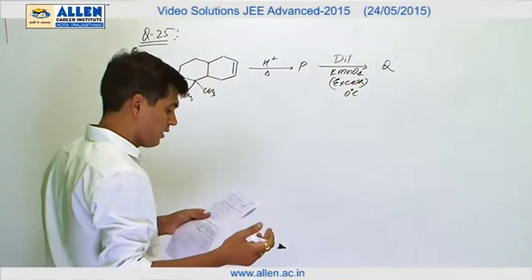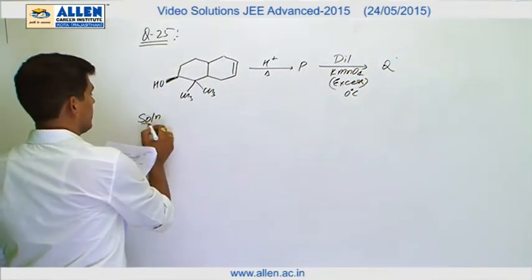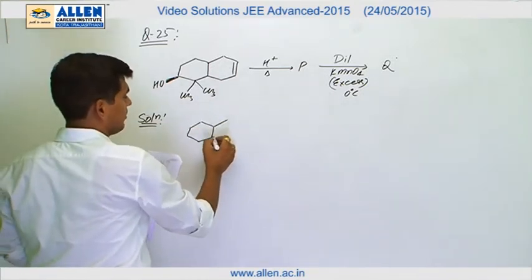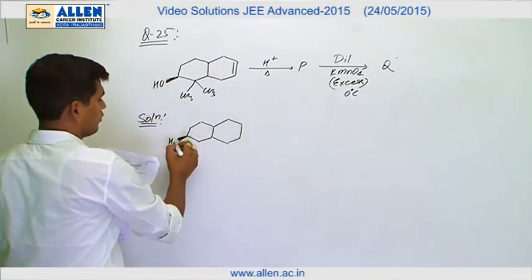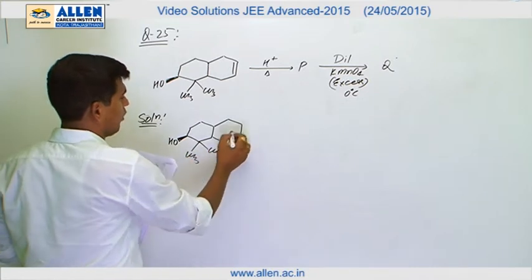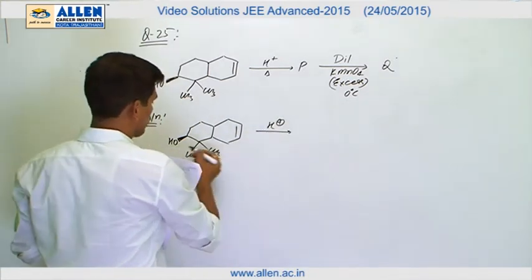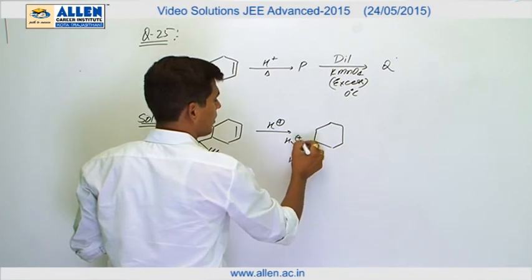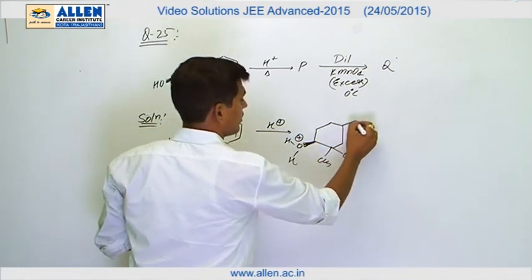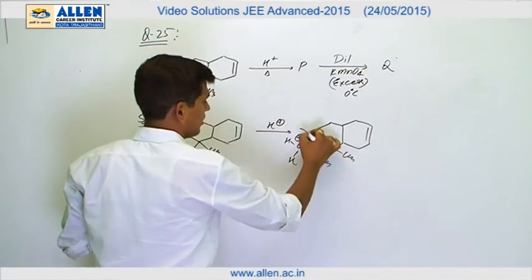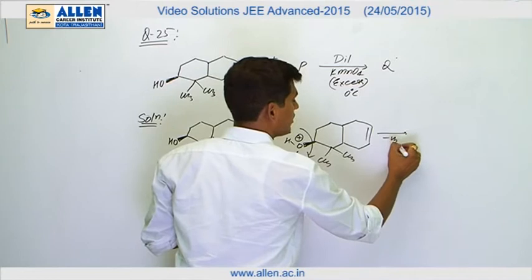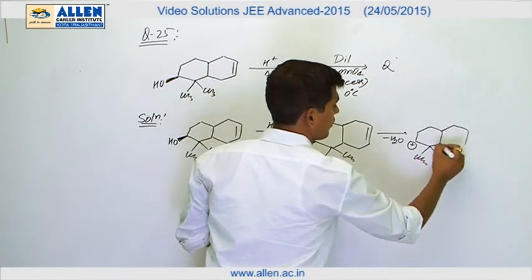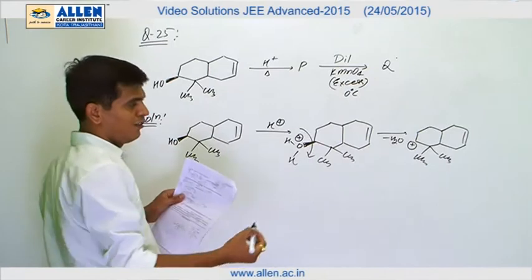Let's solve it. The first step is the dehydration of the alcohol. Initially, H+ protonates this OH group so that it becomes a good leaving group, which immediately loses as water and generates a carbocation — a CS3 ring along with a double bond. Now it's an unstable carbocation.